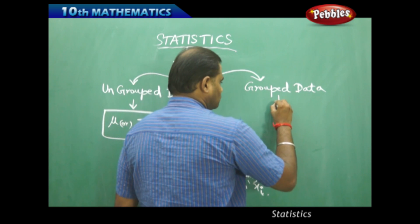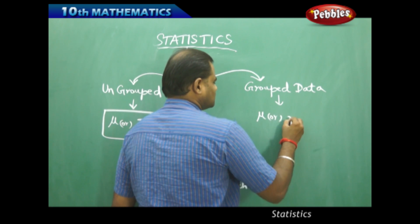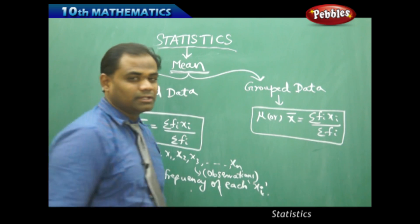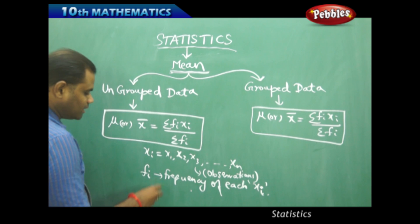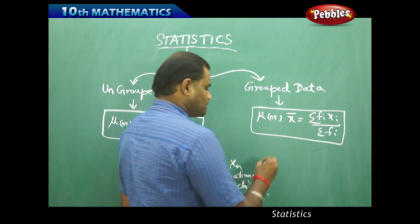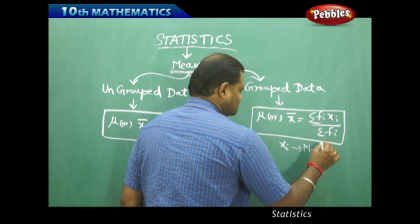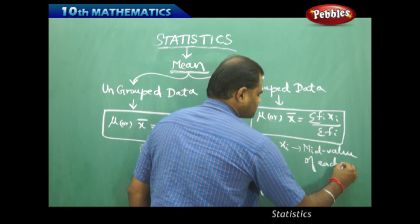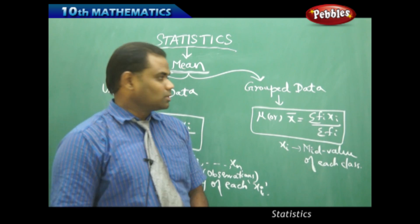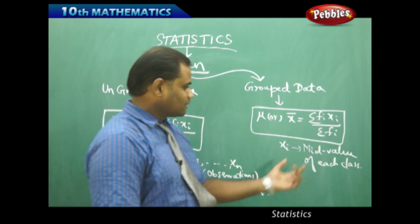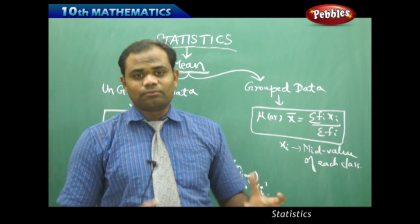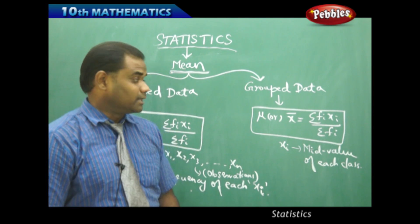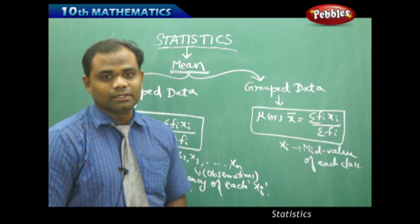For grouped data, the mean formula x-bar is still σfixi divided by σfi — the formula doesn't change. The only thing which changes is the observation: for ungrouped data we have direct observations x1 to xn, but for grouped data, xi is the mid value of each class interval. So the frequency is the same, but xi is taken as the midpoint of each class.